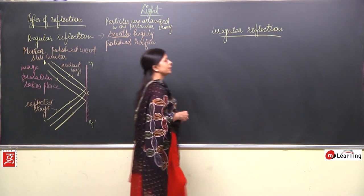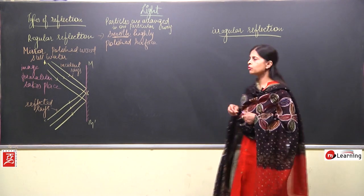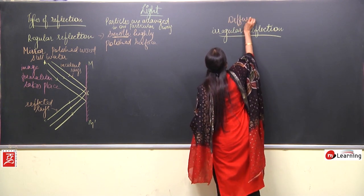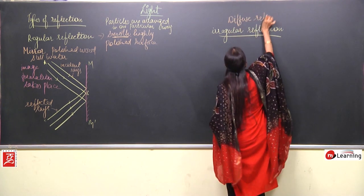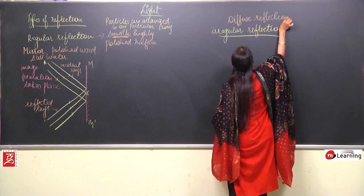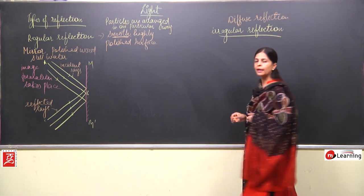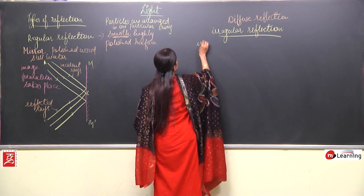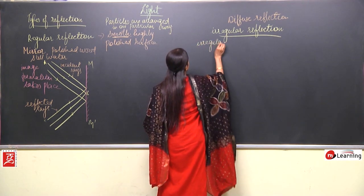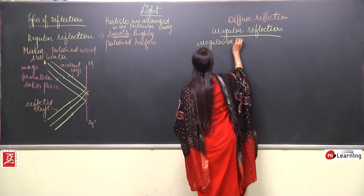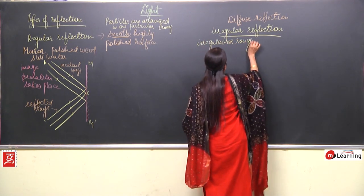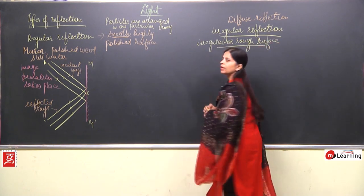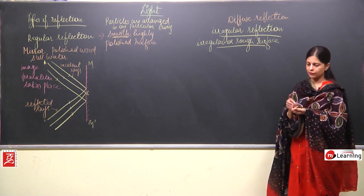Now, when we talk about irregular reflection, it can also be known as diffuse reflection. This type of reflection takes place from an irregular or rough surface.